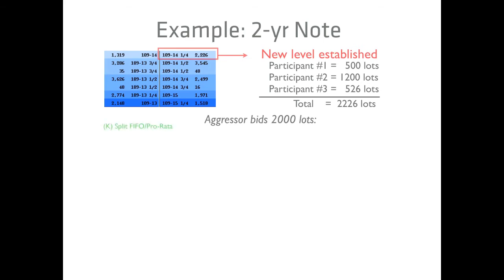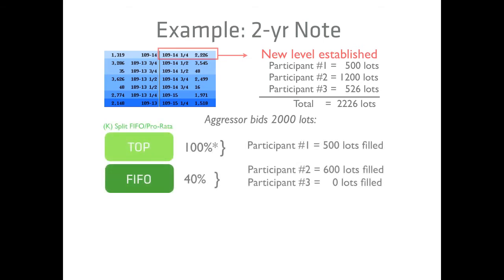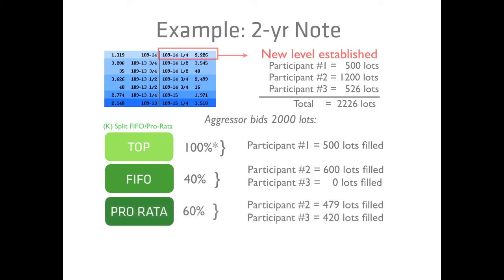An aggressor enters a 14.25 bid for 2,000 lots. What follows is a match event via algorithm K, split FIFO Pro-Rata, which incorporates all four rules. Participant 1 is entirely filled, and then the others receive 1,080 and 420 lots respectively via combination of the FIFO and Pro-Rata rules.